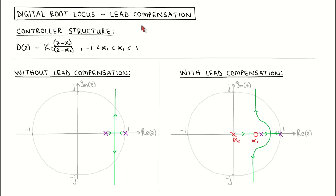The idea of lead compensation is to change the structure of the digital controller by adding a real pole and a real zero, with the zero located to the right of the pole in the z-plane. This has the effect of changing the root locus, which allows us to place the closed loop poles in desirable locations, thereby achieving the desired transient response.